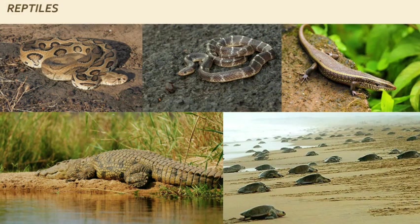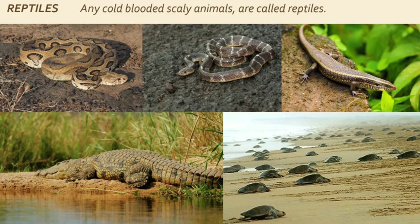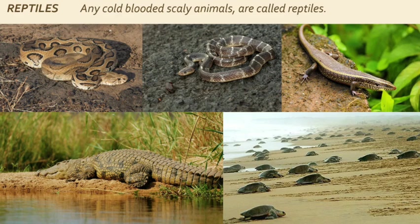Children, I am sure you must have seen reptiles. Any cold-blooded scaly animals are called reptiles — like snakes, lizards, crocodiles, turtles, etc. Goa has many types of snakes, and crocodiles are found in the mangroves of Kumbarjua. Between October and December, turtles — known as kaso — come from the sea to lay their eggs on several beaches of Goa. The most famous beaches are Morji, Calangute, etc.